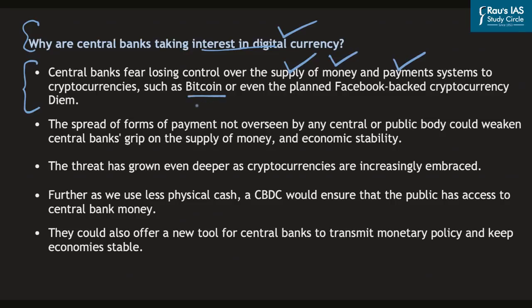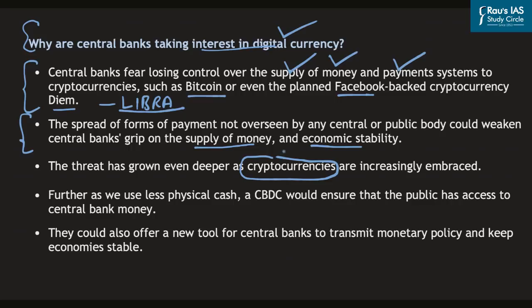Cryptocurrencies like Bitcoin and the one backed by Facebook — currently known as Diem, earlier named Libra — are in wide circulation and being widely accepted. This is making central banks wary that they might lose control over the supply of money and payment systems. As cryptocurrencies are beyond the control of central banks, they might lose their grip on money supply and economic stability. This increasing acceptance of cryptocurrencies is driving central banks to release their own digital currencies.